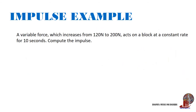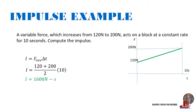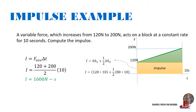The third example is a deviation of the second: a variable force which increases from 120 Newtons to 200 Newtons acts on a block for 10 seconds. Compute the impulse. Using the formula I equals average force times delta T: 120 plus 200 all over 2 times 10 seconds gives 1600 Newton-seconds. Graphically, the initial force is lifted to 120 Newtons, making the area a trapezoid. Dividing it into a rectangle and a triangle: BH1 plus half of BH2 gives 120 times 10 plus half of 80 times 10, equaling the same 1600 Newton-seconds.